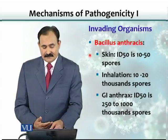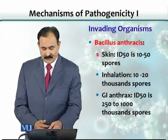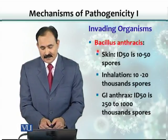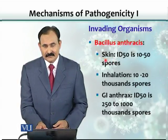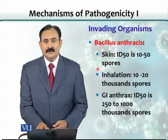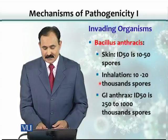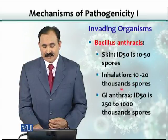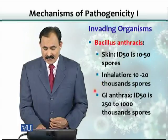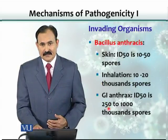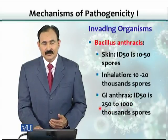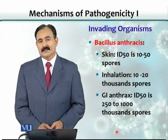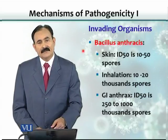As an example of how ID50 varies with route: Bacillus anthracis, which causes anthrax, requires only 10 to 50 spores to cause infection when introduced through the skin. But through the respiratory system, 10,000 to 20,000 spores are needed. And if ingested through the oral cavity, 250 to 1,000 spores are required. So ID50 clearly varies with the route of entry.